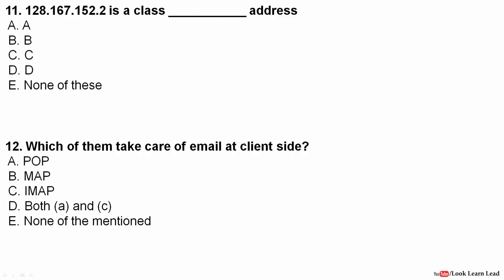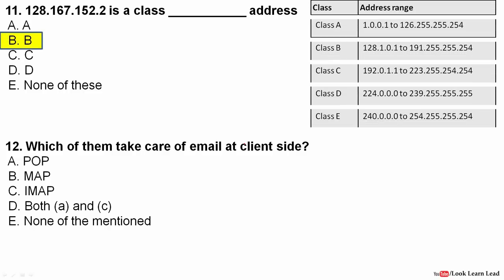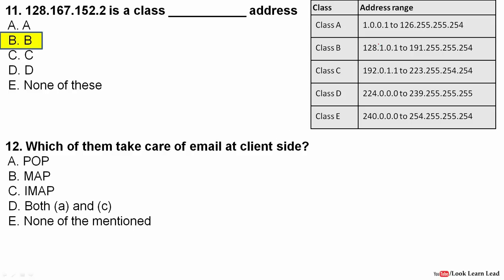The address 128.167.152.2 belongs to which class? The answer is Class B. You can determine the class by looking at the first octet. Class A ranges from 1 to 127, Class B ranges from 128 to 191. Since the first octet here is 128, this is a Class B address. Remember the ranges for classes A, B, C, and D.